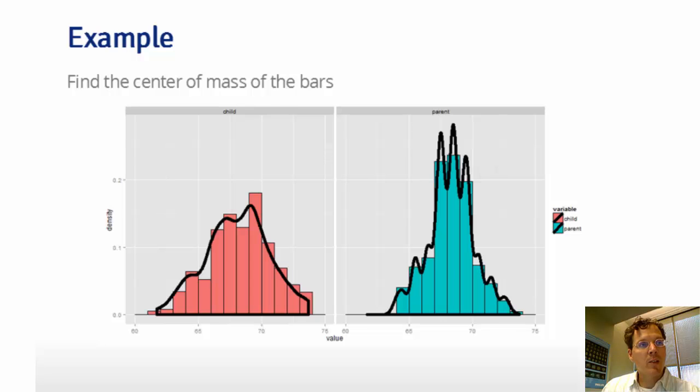In this case, we have parents' heights and children's heights in a paired dataset. Here I have a histogram for the child's height and here the histogram for the parent's height. I've overlaid a continuous density estimate.